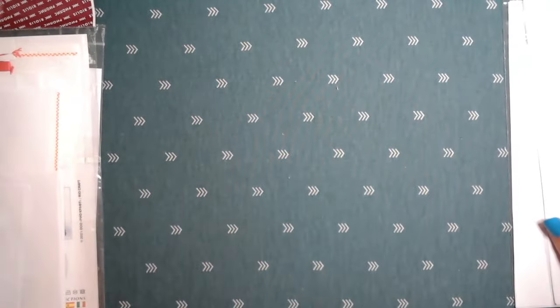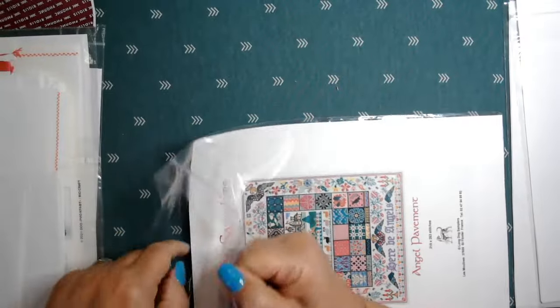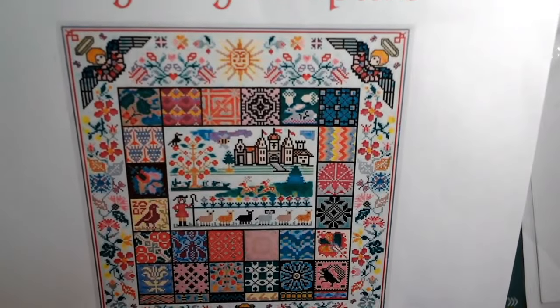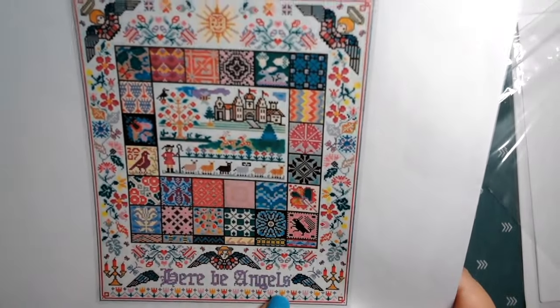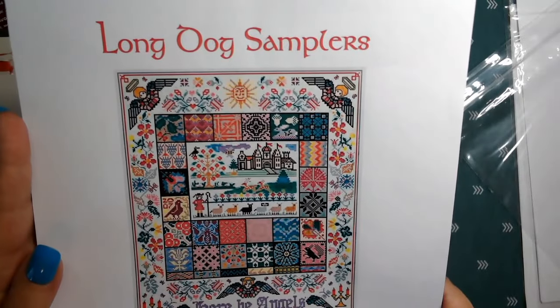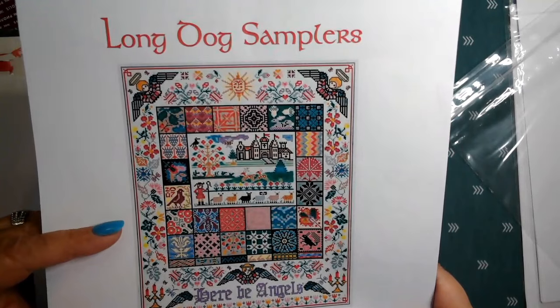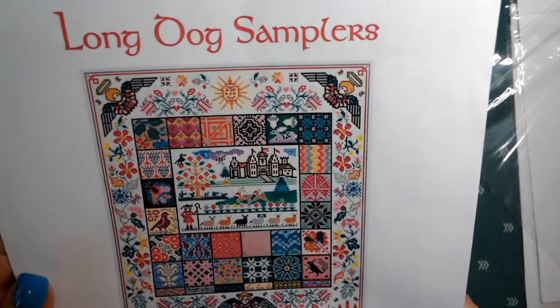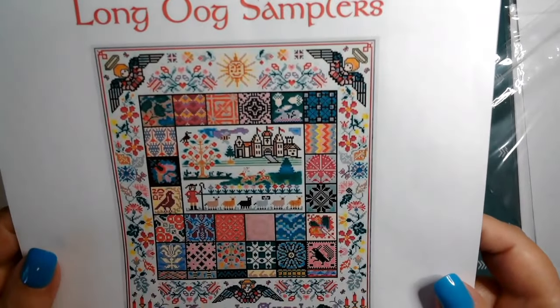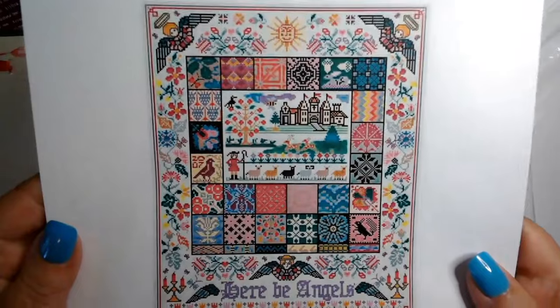But I just thought that was beautiful. And then the other one I got from them is called Angel Pavement. This is a really big one. It is 219 by 263 stitches. But look at that. Here be Angels. These samplers have so much going on in them. This company puts out amazing patterns. And if you are on Facebook, join, follow their Facebook page because they're constantly posting new things. Here we've got a shepherd with sheep, a castle, angels in the corner. So many beautiful things. And here they did it multicolor. But you could even just do this in one color and it would be gorgeous.